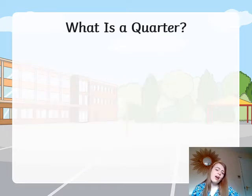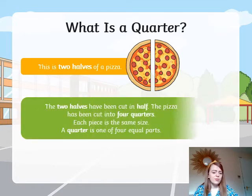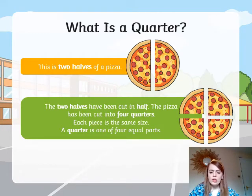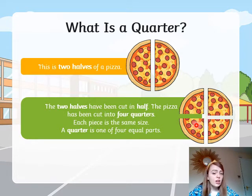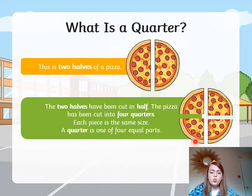So if you know what a half of a shape is, then what is a quarter? Well, here we have the two halves of the pizza, and if you cut the two halves in half, the pizza has been cut into four quarters and each piece is the same size. A quarter is one of four equal parts, so this pizza has been split into four quarters and one quarter is just one of those four equal parts.